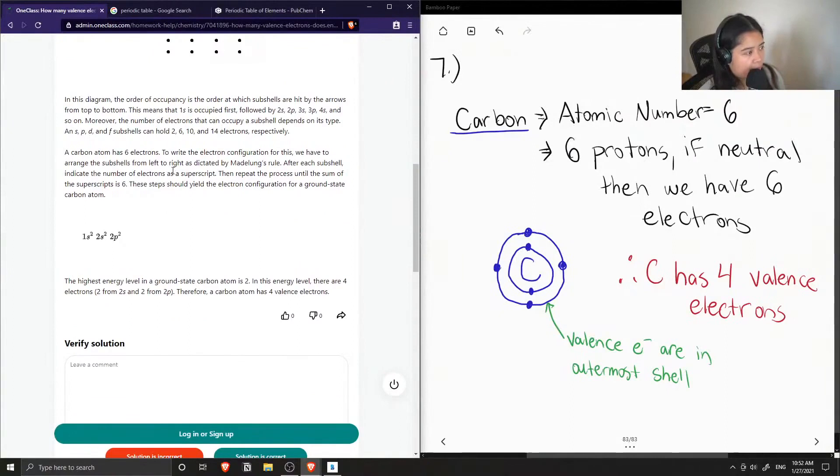Okay, so they found out that carbon has six electrons. And then they also showed that the electron configuration of a ground state carbon atom is 1s2, 2s2, 2p2.